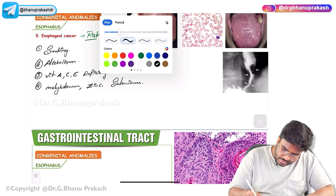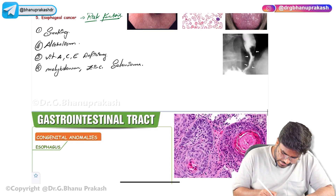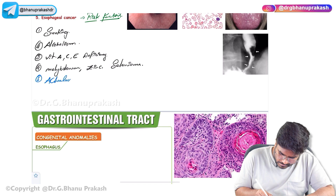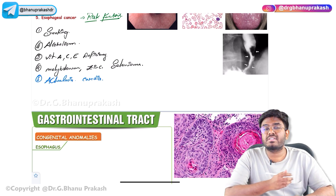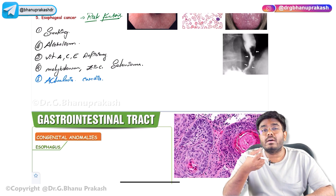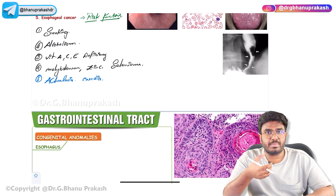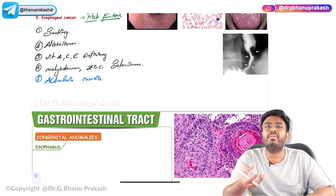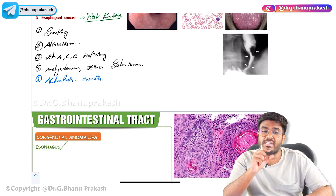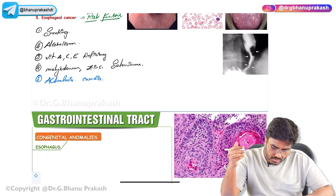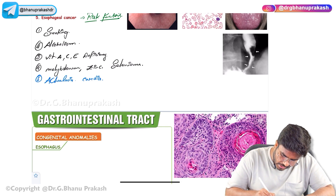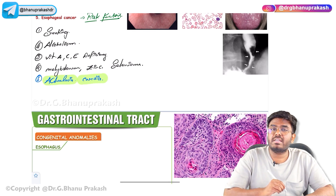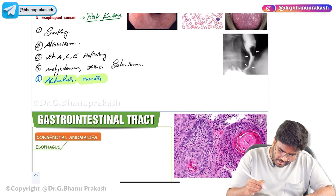Another important risk factor is achalasia cardia, where relaxation of the lower esophageal sphincter does not happen properly, causing progressive dysphagia. Having achalasia cardia increases the risk of esophageal carcinoma.